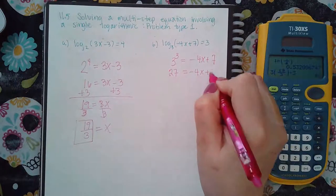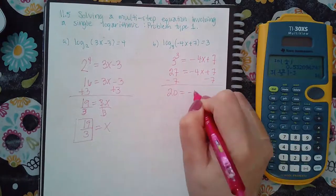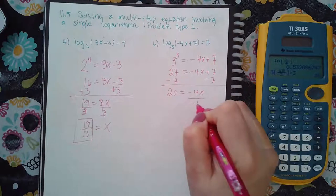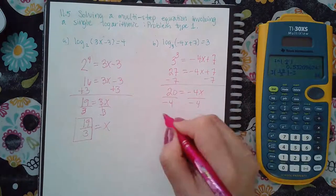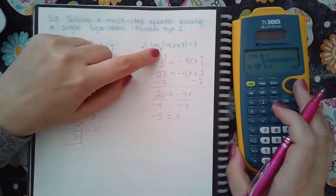3 to the third power is 27. We get negative 4x plus 7. We minus 7 from both sides, get that 20 equals negative 4x. Divide by negative 4, divide by negative 4, we get negative 5 equals x.